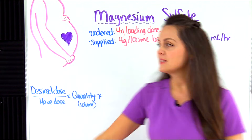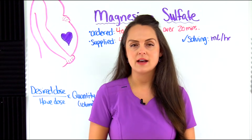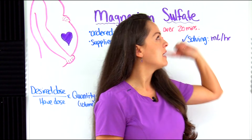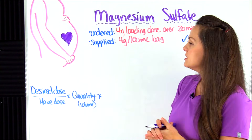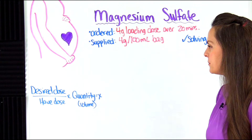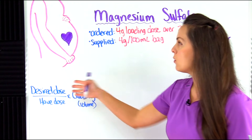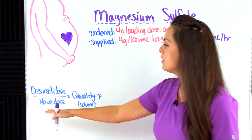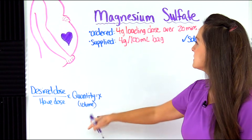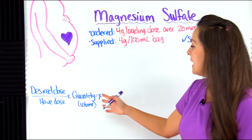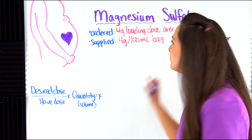To do that we're going to use desired over have. If you prefer a different method like dimensional analysis or ratio and proportion, I have a whole bunch of videos that will show you how to do those. With desired over have, we use this formula: we put the desired dose ordered by the healthcare provider over the dose we have on hand, multiply that by the quantity — in this case the volume — and that equals X, what we need to figure out.